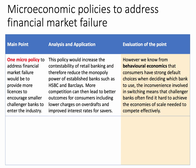So one micro policy to address financial market failure would be to provide more licences for smaller challenger banks to enter the banking sector. This policy would increase the contestability of retail commercial banking and therefore limit the existing monopoly power of established banks such as HSBC and Barclays. Developing a chain of reasoning: if there's more competition in the market, that could lead to better outcomes for consumers — perhaps lower charges on overdrafts or better interest rates for savers.